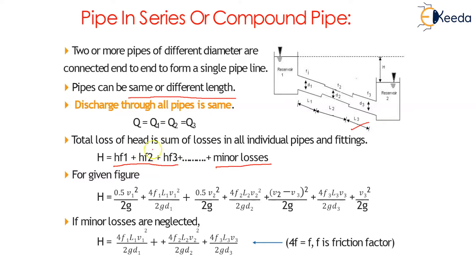For the given figure, the total head loss is: 0.5·V1²/2g (entry loss) + 4F1·L1·V1²/(2g·D1) (friction in pipe 1) + 0.5·V2²/2g (sudden contraction) + 4F2·L2·V2²/(2g·D2) (friction in pipe 2) + (V2−V3)²/2g (sudden expansion) + 4F3·L3·V3²/(2g·D3) (friction in pipe 3) + V3²/2g (exit loss).